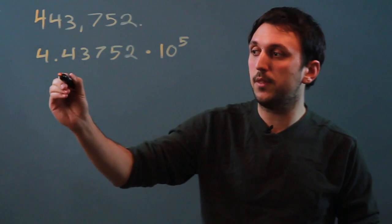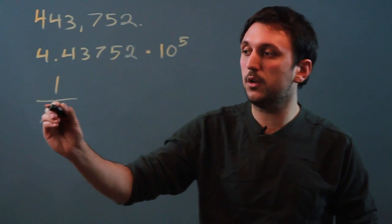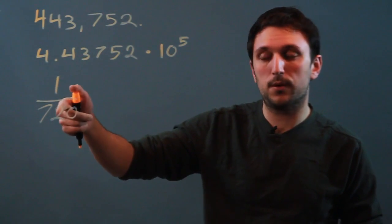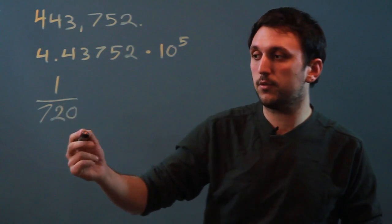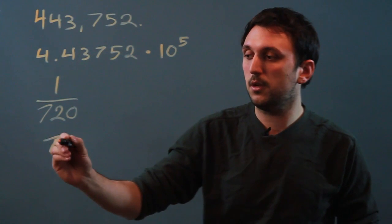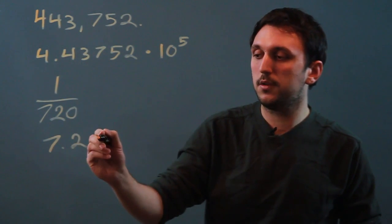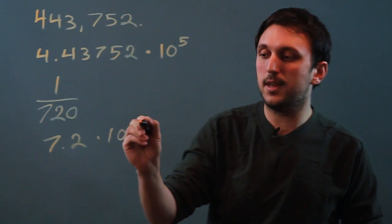Another way we would have to do it is if we had the number 1 over 720. Now, this is a fraction, but it's still a real number. So, if we wanted to normalize this, we would have to say 7.2, because we move 1, 2 over, times 10 to the negative 2.